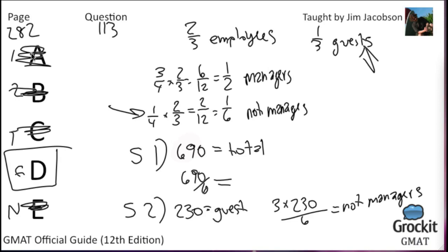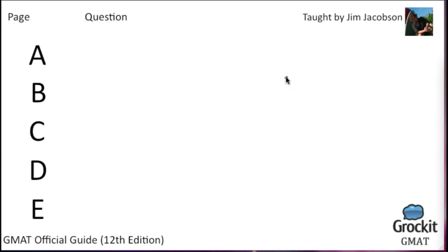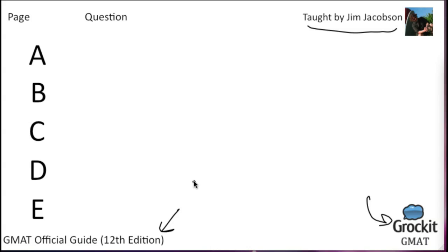I had to rush a little bit to get back on the published schedule, and I'm sorry about that. If you have questions, send me a Grockett message and I'll be happy to answer. We are back on schedule. My name is Jim Jacobson; you've been watching Grockett's OGTV broadcast of the 12th edition of the Official Guide to the GMAT. Next time we'll pick up on page 283 with question 114 in the data sufficiency section. Thanks for joining us.